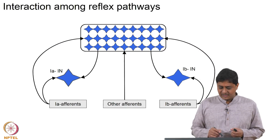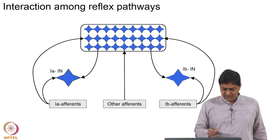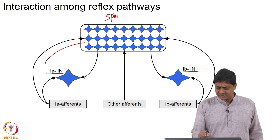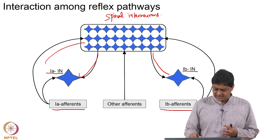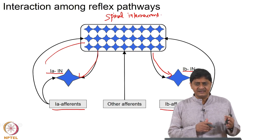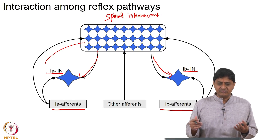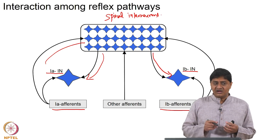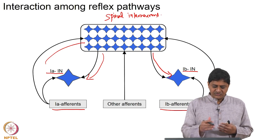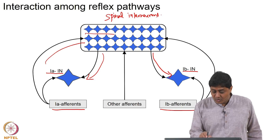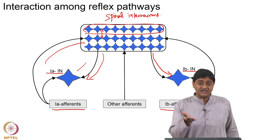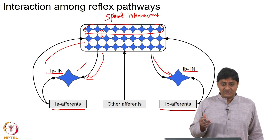Inputs from 1A interneurons and 1B interneurons are received and they send information to multiple spinal interneurons. All this information converges onto interneurons or onto alpha motor neurons. Examination of the spinal cord gives the impression that it is a complete mess — the connections are completely messy and you cannot make sense out of them. Our classical neurophysiological approach is not in a position to explain these things because there are just so many neurons and it is not clear which is connecting to which.